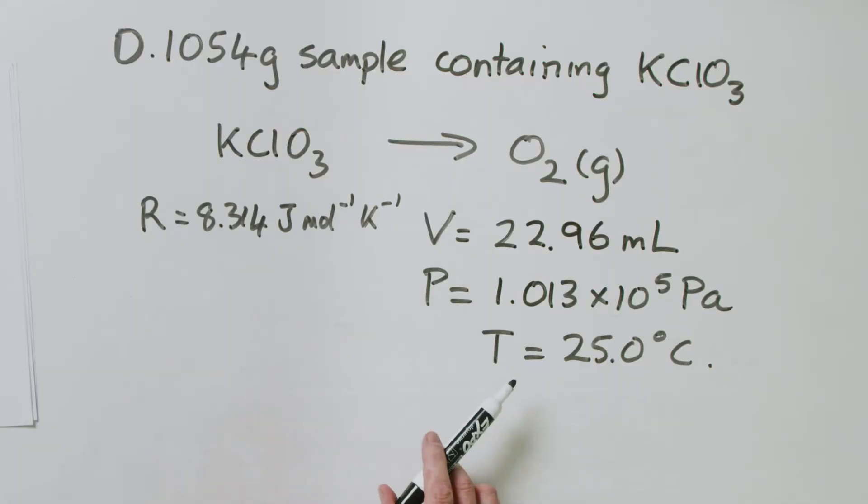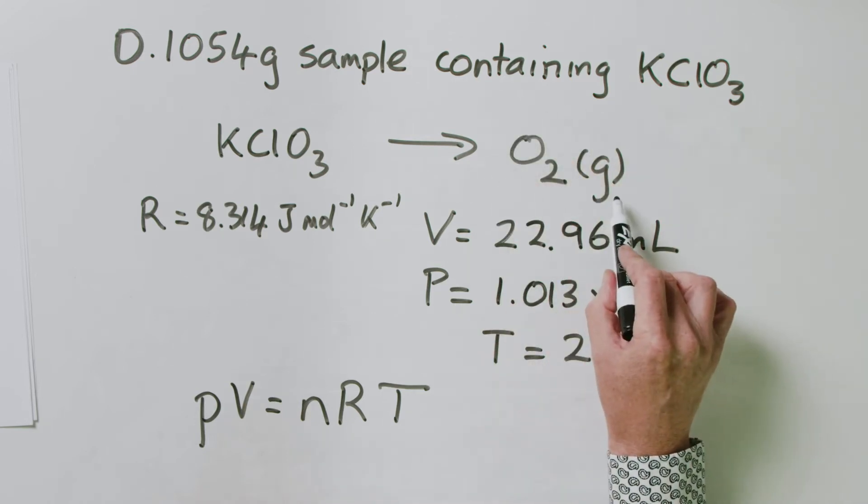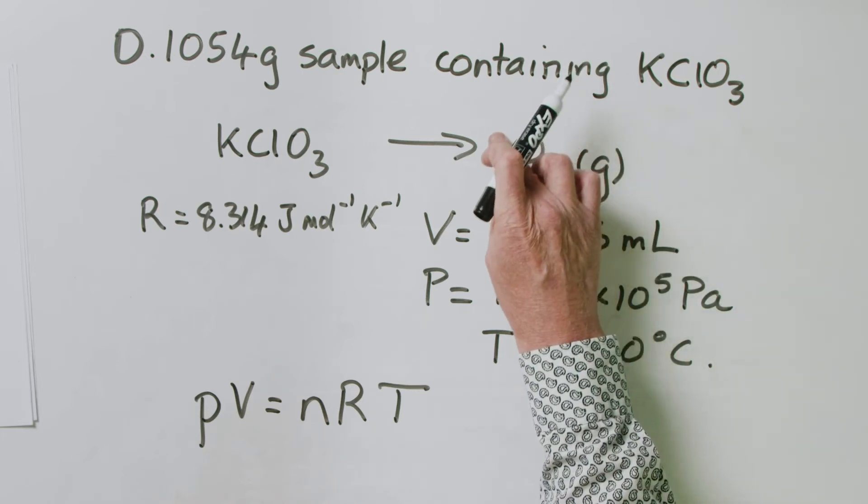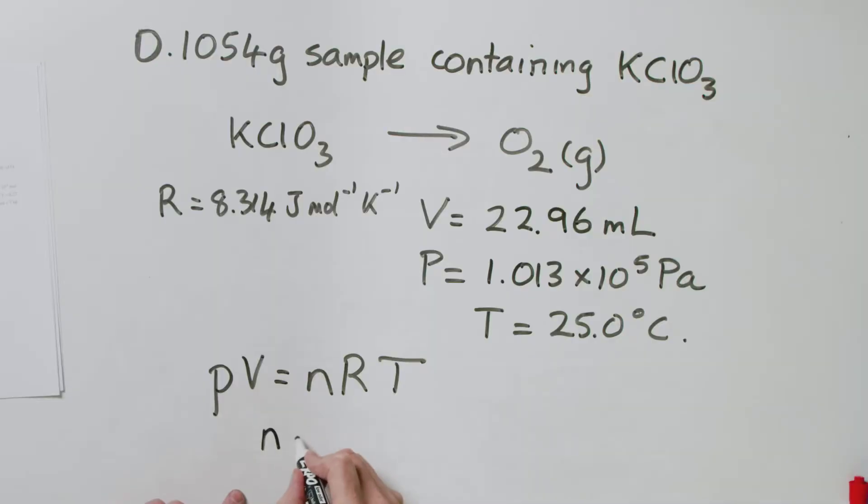We're given R, V, P, and T, so what equation contains these? PV = nRT. We don't know what n is, so we're calculating the number of moles of O2. If we know the number of moles of O2, we know that's related to the number of moles of potassium chlorate. Let's rearrange this equation and make n the subject: n = PV/RT.